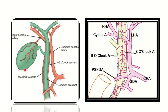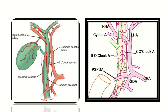Here we can see these structures: the gallbladder, the cystic duct, and the common hepatic duct. The cystic duct joins together with the common hepatic duct to form the common bile duct. Here, the right hepatic duct and left hepatic duct form the common hepatic duct, which then joins the cystic duct to form the common bile duct.